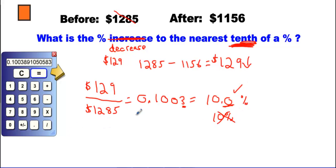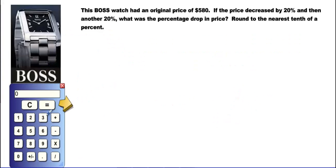So the answer is a 10.0% decrease. Now we have a Hugo Boss watch problem. The watch had an original price of $580. The price decreased by 20%, then by another 20%. You might think that's a 40% drop — but you're about to see that's not the case. The question asks for the actual percentage drop in price, rounded to the nearest tenth.